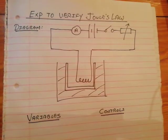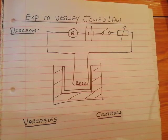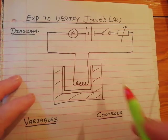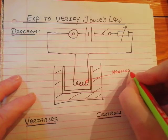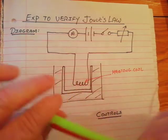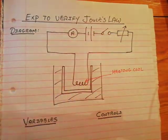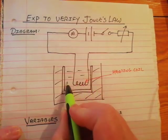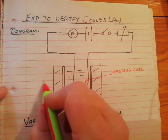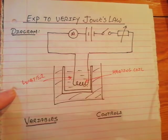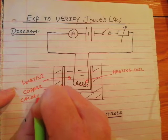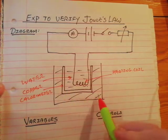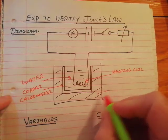Now, looking at the Joule's Law experiment. Here is the traditional diagram of the circuit set up to verify Joule's Law. The star of the show is the heating coil, which converts electrical energy from the battery into heat energy. The water — which many people forget to include — is in a copper calorimeter. Outside the copper calorimeter, to prevent any heat loss to the surroundings, we have some lagging, or insulation.